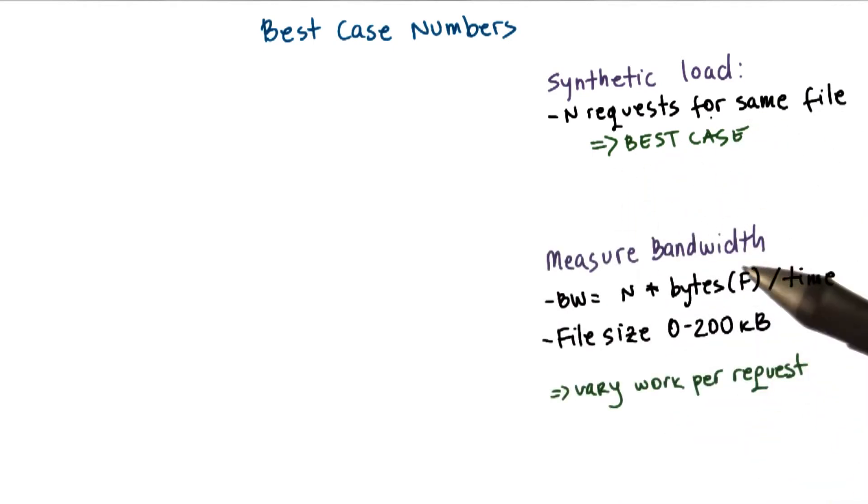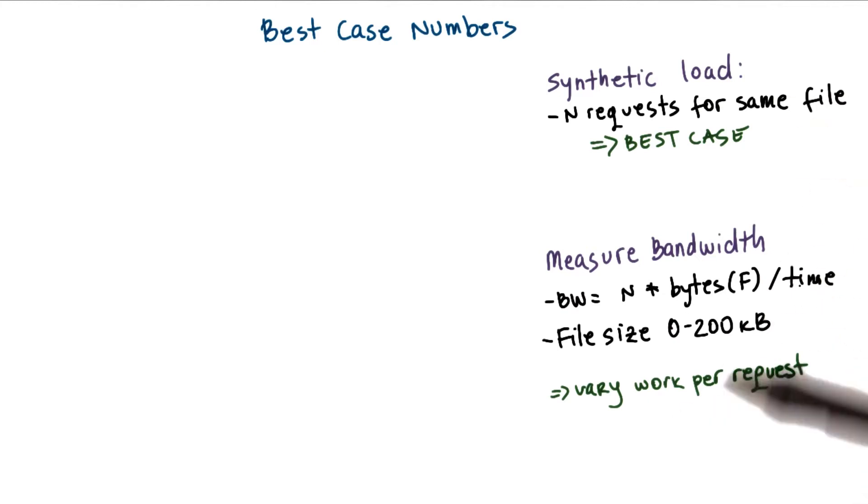So for the best case experiments, they measure bandwidth and they do that. They vary the file size of 0 to 200 kilobytes. And they measure bandwidth as the n, the number of requests, times the file size, over the time that it takes to process the n number of requests for this file.